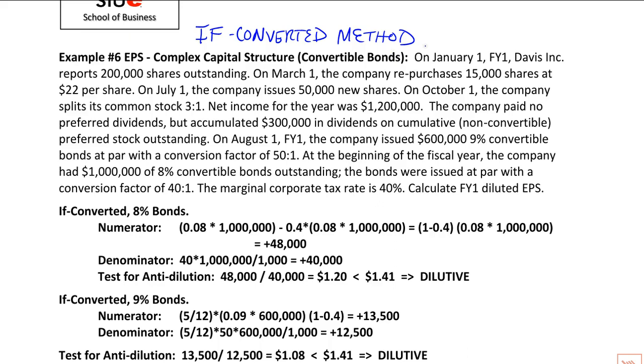Just going on with the if-converted method. This is going to be similar to the problem we saw with basic EPS: 200,000 shares outstanding, three-for-one split, net income 1.2 million.